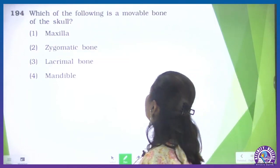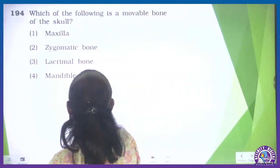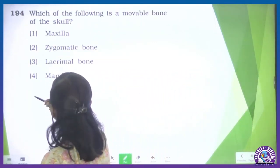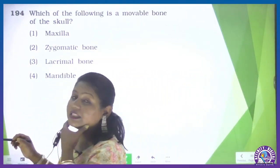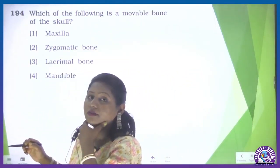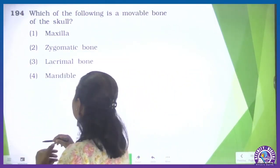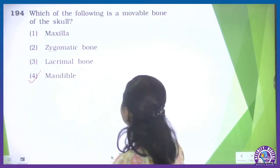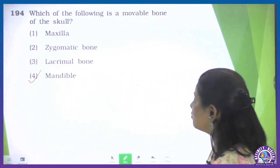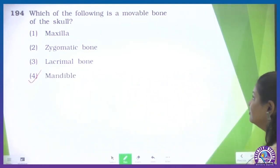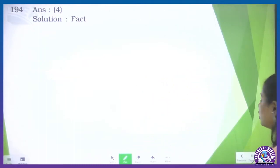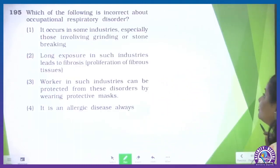Question 194: which is the movable bone in our skull? Yes — the mandible is the one movable bone. No other bone in the skull is movable. The fourth option is the correct one.